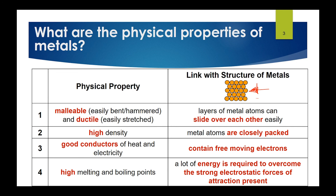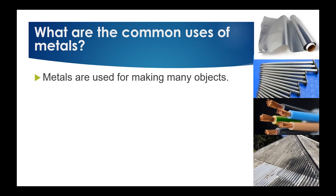Now let's look at the common uses of metals. Metals are used to make many different objects — for example, aluminum foil made of aluminum, iron nails, copper wire made of copper. There is also an interesting example: galvanized iron sheets used as roofing, which you may have seen in local houses in places like Bintan or Cambodia. The choice of which metal to use depends on factors such as physical properties, cost, and chemical properties.